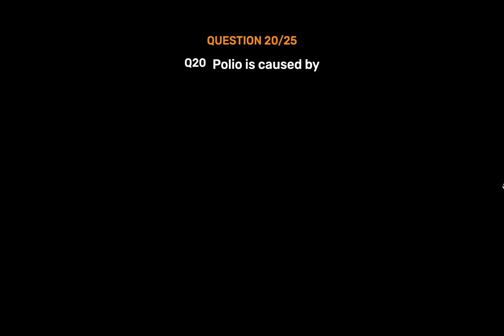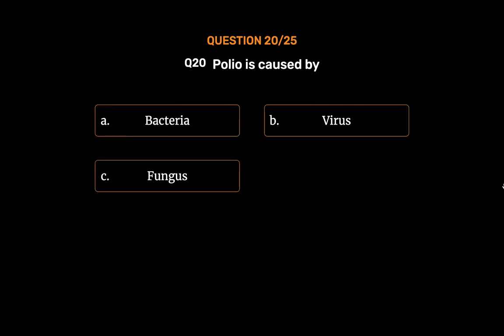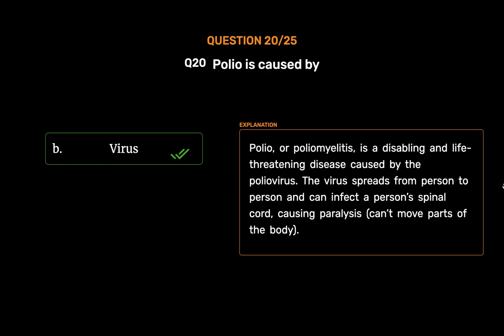Question No. 20. Polio is caused by. Option A: Bacteria. Option B: Virus. Option C: Fungus. Option D: Protozoa. The correct answer is Option B: Virus. Polio, or poliomyelitis, is a disabling and life-threatening disease caused by the poliovirus. The virus spreads from person to person and can infect a person's spinal cord, causing paralysis — inability to move parts of the body.